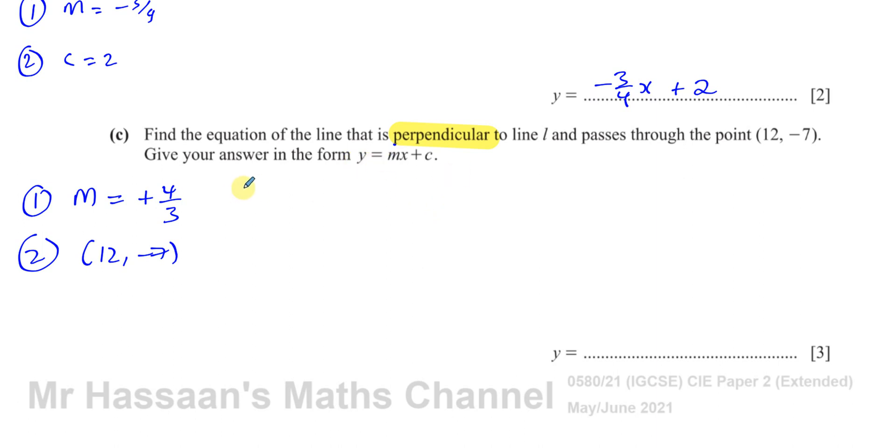So we could use two methods. This method would probably be easier in this case. We can use Y equals MX plus C to find what C is. So instead of Y, I'm going to write minus 7. Instead of M, I'm going to write 4 over 3. Instead of X, I'm going to write 12 plus C. The 3 and the 12 cancel out, leaving you with 4. So you're left with negative 7 equals 16 plus C. So subtract 16 from both sides. Negative 7 minus 16 is negative 23. So now we know what C is, we know what M is. We can write Y equals 4 over 3X minus 23. There's the answer.